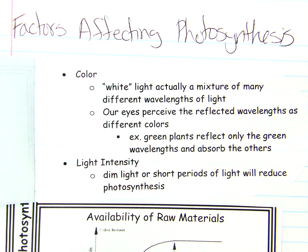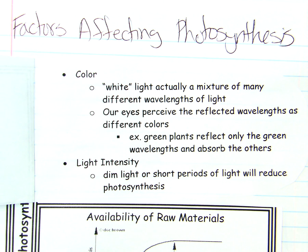Our eyes perceive the reflected wavelengths of different colors. So green plants, because of the chlorophyll, reflect only the green wavelengths and absorb the others. So if we were to put a plant under a green light bulb, it would die because it can't absorb the green light. So the color of light is important.